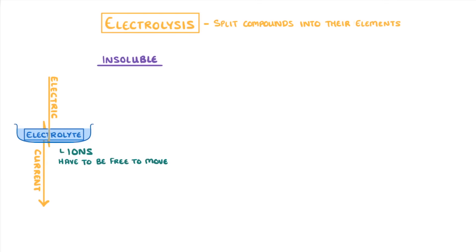We've seen in our last couple of videos that electrolysis is a technique that we use to split compounds into their elements, which we do by passing an electric current through an electrolyte. For this process to work, the ions in our electrolyte have to be free to move around. So for insoluble compounds, like most metal oxides, this means that we'd have to melt them to make them a molten liquid.